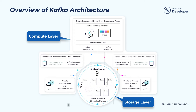One is called the Connect API. This is designed for integrating Kafka with the rest of the ecosystem. For example, if you have external data sources and you want to get that data into Kafka, you can use source connectors. If you have data sinks, like a search engine or a graph engine, you can use sync connectors to flow Kafka's data into those systems.